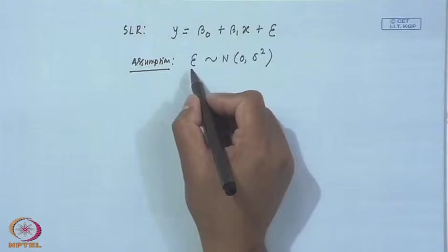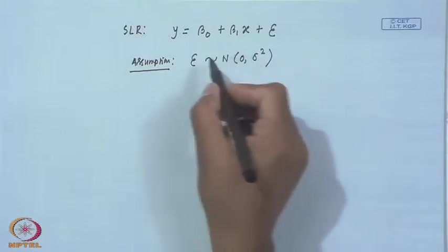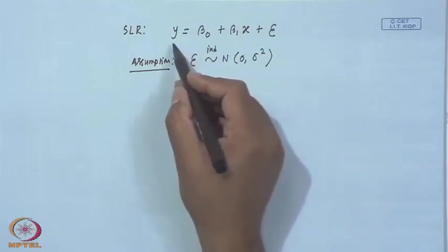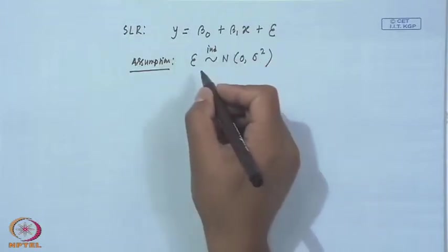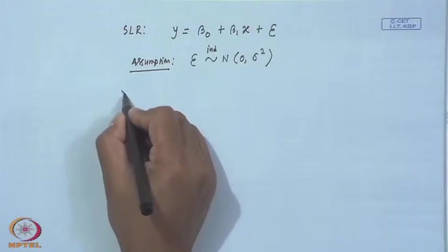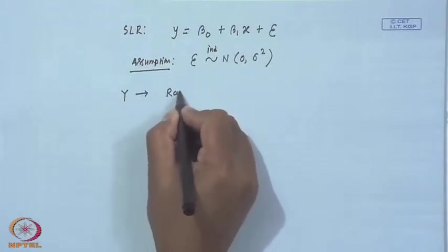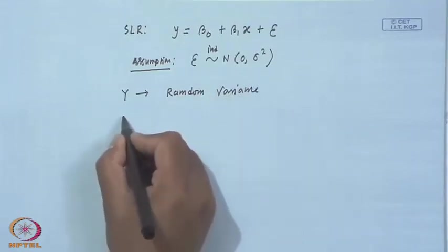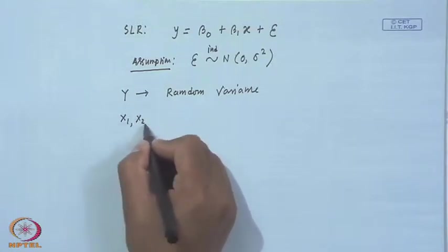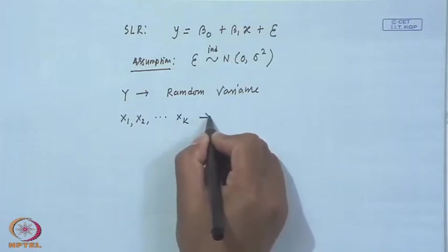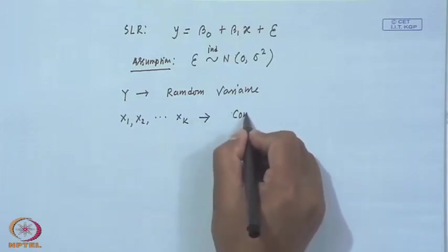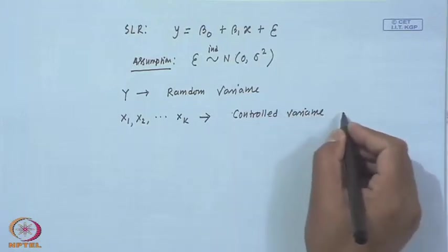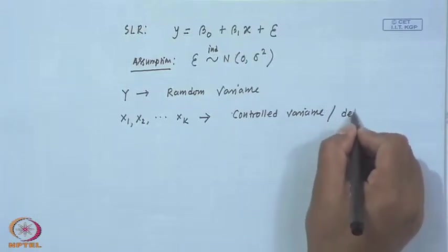This is the assumption we make in simple linear regression and also in the multiple linear regression model. Assuming that ε is a random variable which follows normal distribution and the errors are independent — putting index i is the same as assuming that y is a random variable. So what we assume is that the response variable y is a random variable and the regressors x1, x2, xk are not random variables; they are called controlled variables or deterministic variables.